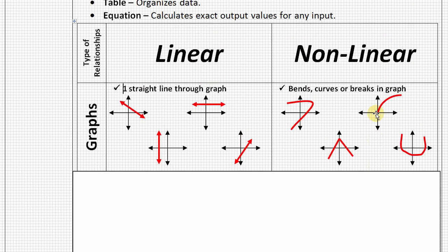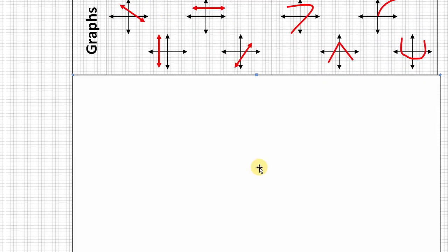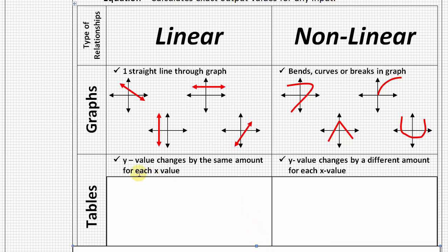Next is looking at tables. And with tables, we're looking for how does the data behave? And again, this is ideal if our x values are all listed in order with their corresponding y values. And so, the y value will change by the same amount for each x value if it is linear. If it's nonlinear, the y values will change by a different amount each time the x value changes. So, let's again take a look at some actual examples.